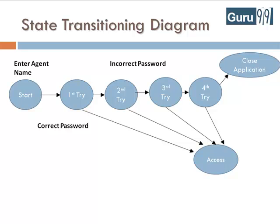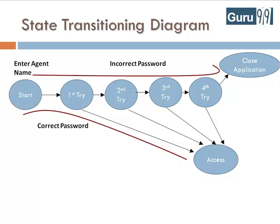Amongst these various system transitions, the scenario of access at first attempt and close of application at fourth attempt are important and need to be essentially tested. But the scenario of access at the second, third, and fourth attempt are less important, and perhaps you can test just one of them.